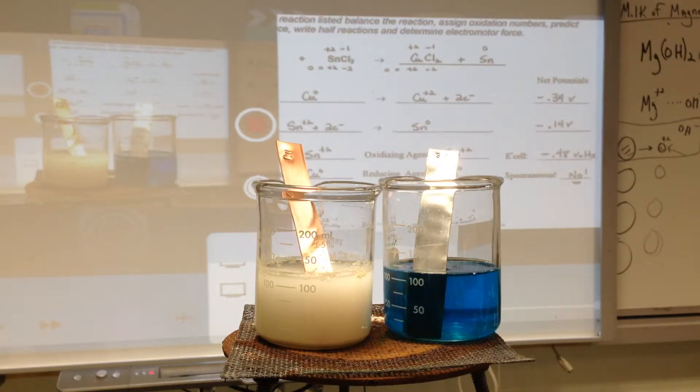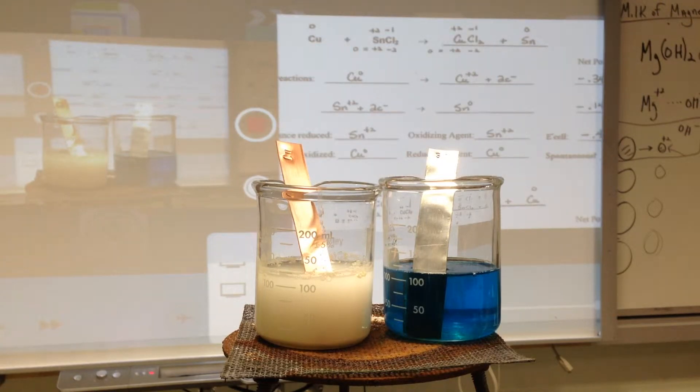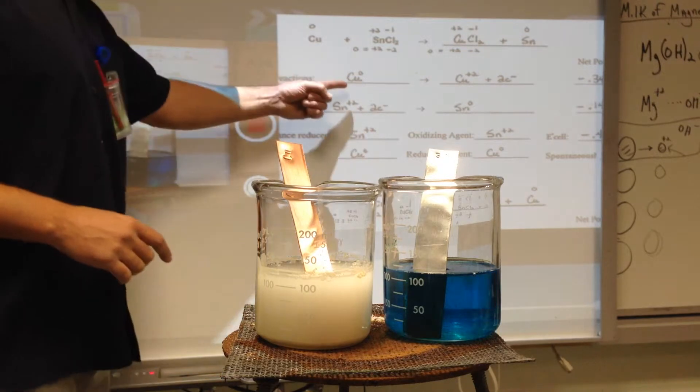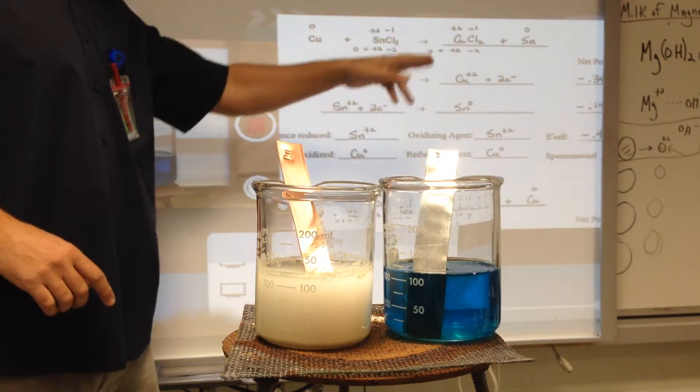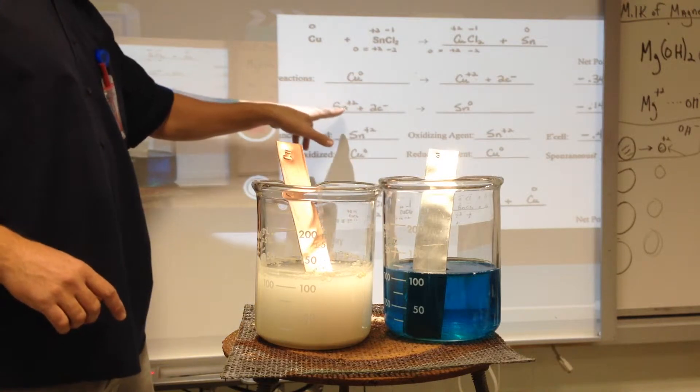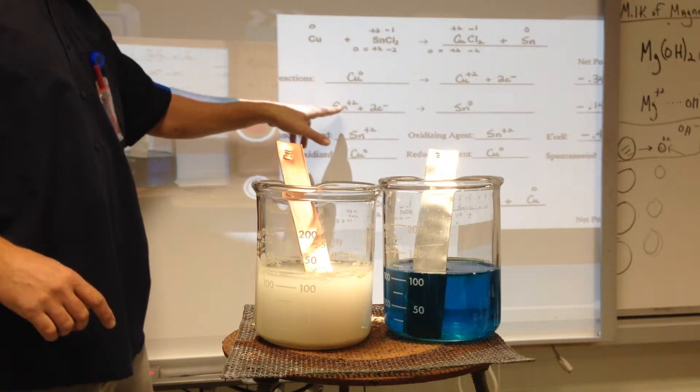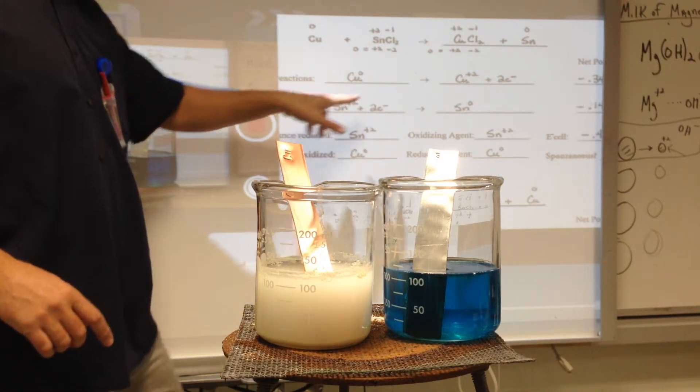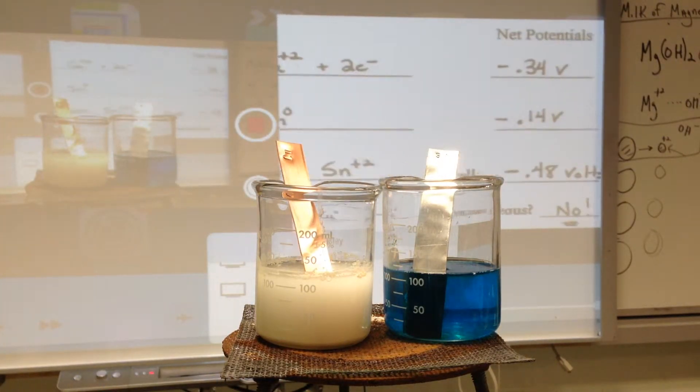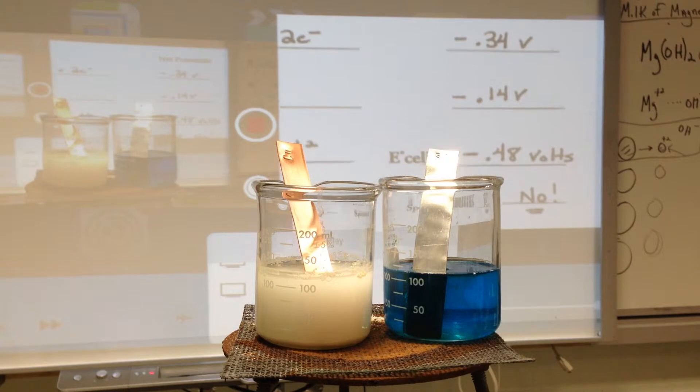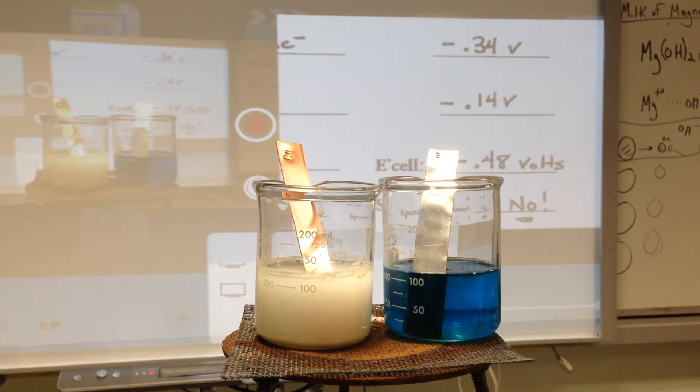If you go to your reduction potential table and do the opposite, you see that copper is oxidizing, so going in the opposite direction, you flip the sign. If tin is going to reduce, as written on the reduction table, you write negative 0.14. What you do with them is add them together,